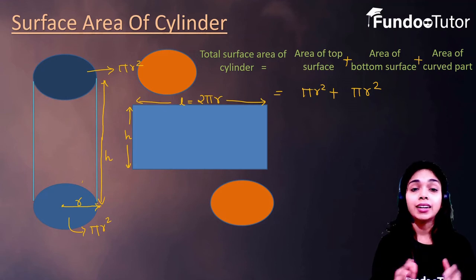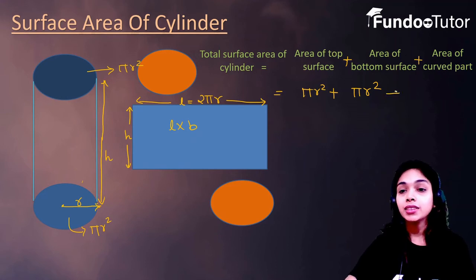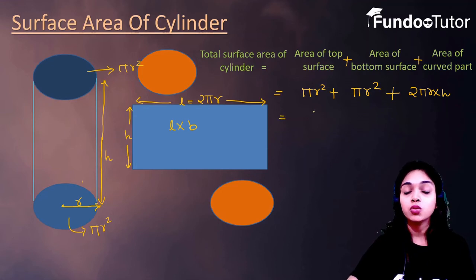Now, we know that the rectangle area is length into breadth. And length and breadth values we know that length is 2 pi r and breadth is height of this cylinder. So, we can write this area of this curve part is 2 pi r into h. So, pi r square plus pi r square. So, after adding this 2 like term, we will get 2 pi r square plus 2 pi r h.